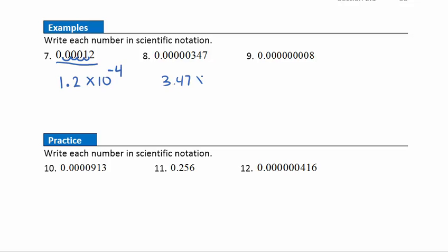Example 8: we need 3.47 times 10 to the — since we want to make this number smaller, we know it's a negative exponent. Counting how many places to move the decimal: one, two, three, four, five, six — so 3.47 times 10 to the negative sixth. Example 9: that's just 8 — written as 8.0 times 10 to the negative — counting ten places to the left, so times 10 to the negative ninth.